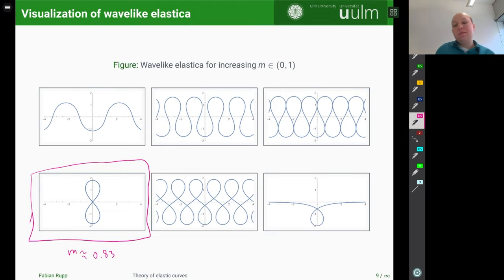Okay, if one then increases the m even further, these two drops that form the figure 8 elastica, they start to open up and drift away from each other. This is what you can see here in the second picture. And if m finally reaches 1, one is left with exactly one drop or one loop. And this is what is called now the borderline elastica.